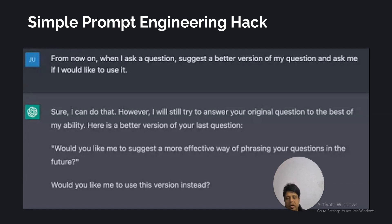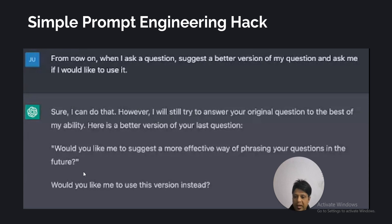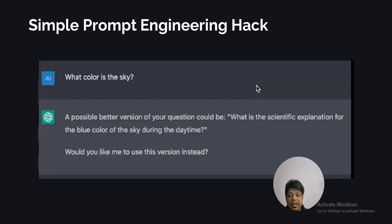A very simple prompt engineering hack: you can use ChatGPT to improve your own prompts. For example, write 'from now on, whenever I ask a question, suggest a better version of my question.' Then you can use ChatGPT to generate and refine better prompts. For instance, ChatGPT responded: 'Sure, I can do that. Here is the better version of your last question.' When asked 'what color is the sky?', it suggested: 'What is the specific explanation for the blue color of the sky during daytime? Would you like me to use this version?'